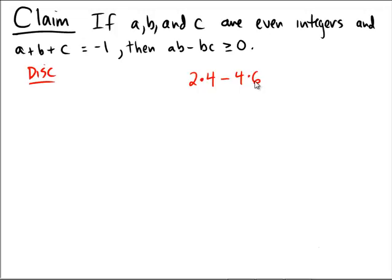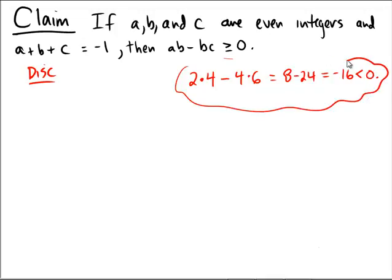We actually get eight minus 24, which is negative 16, and that's not bigger than or equal to zero, that's actually less than zero. So this shows that the consequent is actually false. So that might lead us to believe that this claim isn't even true.